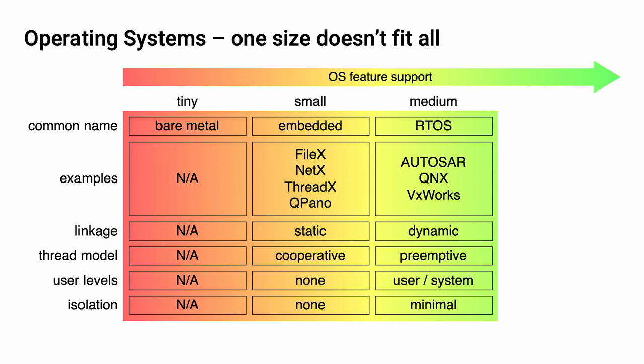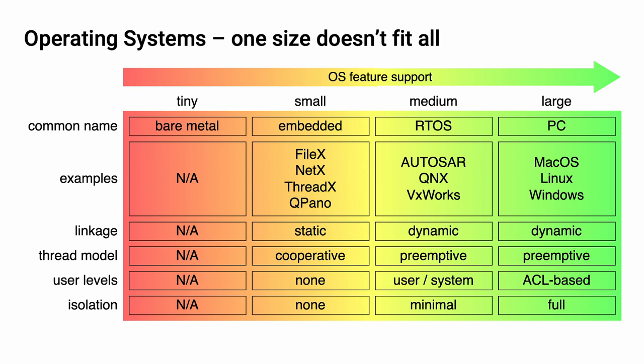Finally, we have what most people think of when thinking about an operating system: the large scale, PC-grade and above. We're talking about operating systems like macOS, Linux, or Windows, where you again have dynamic linkages and preemptive multitasking. Additionally, you have full ACL-based user configuration and full isolation between processes.